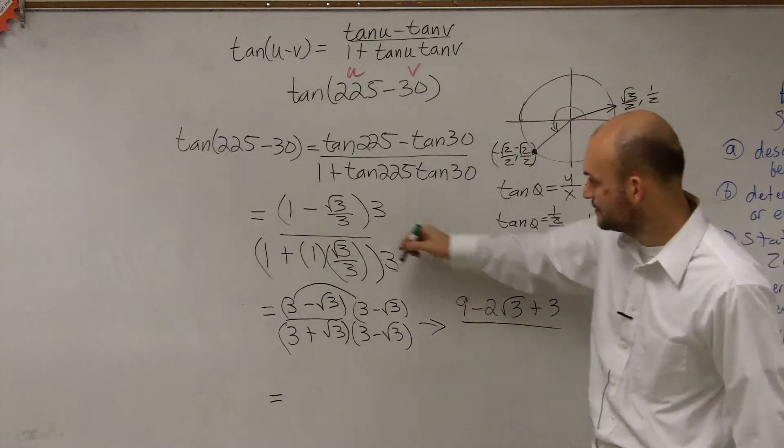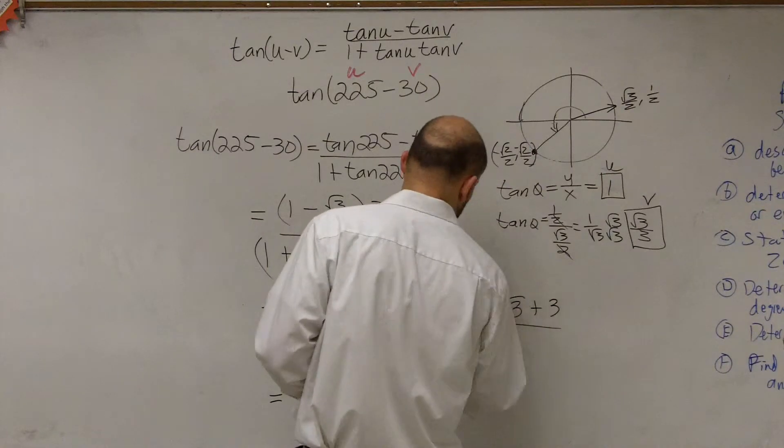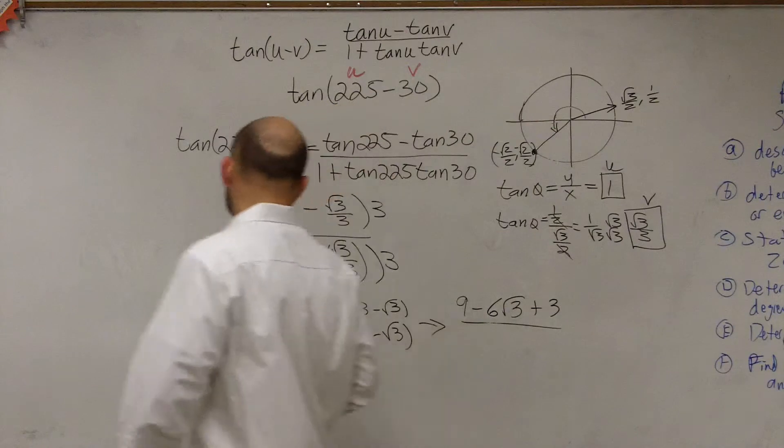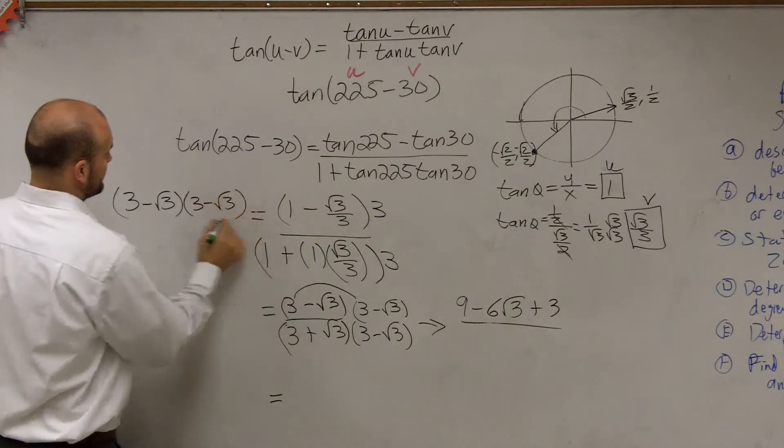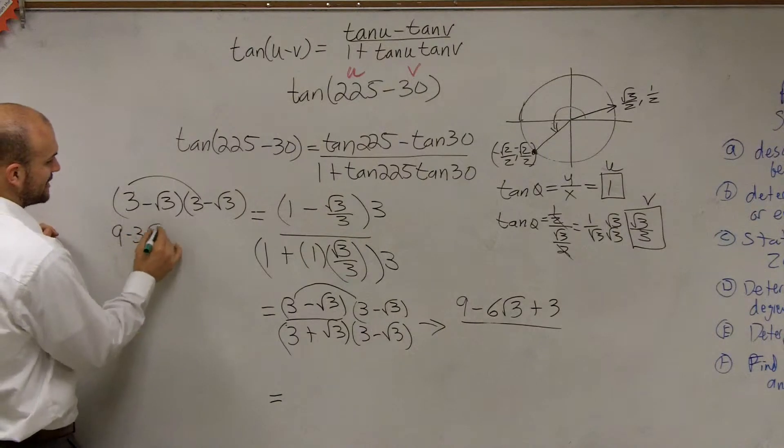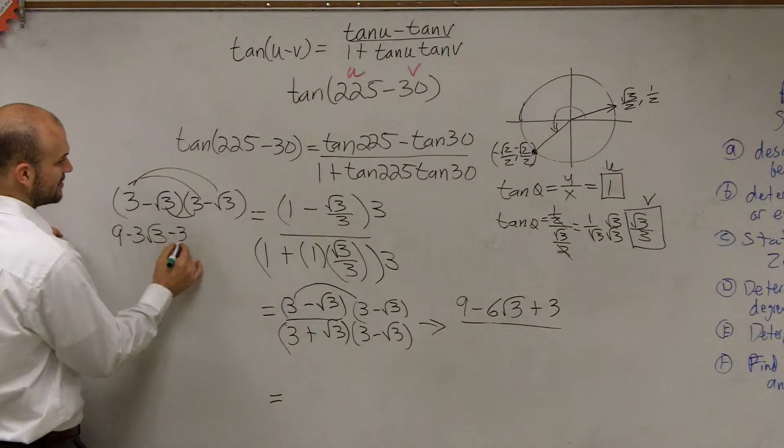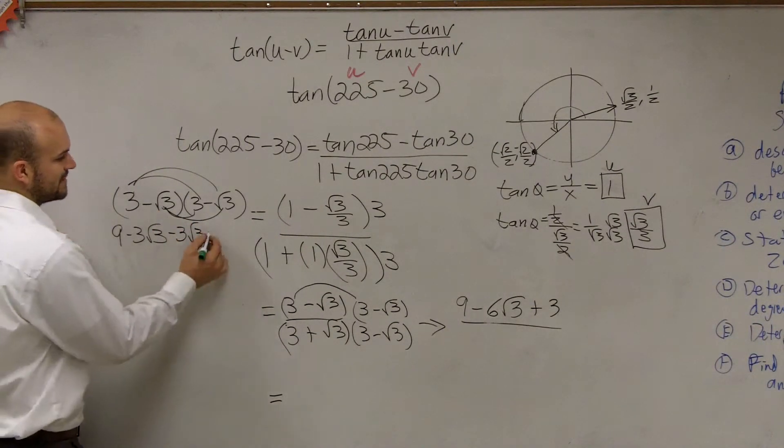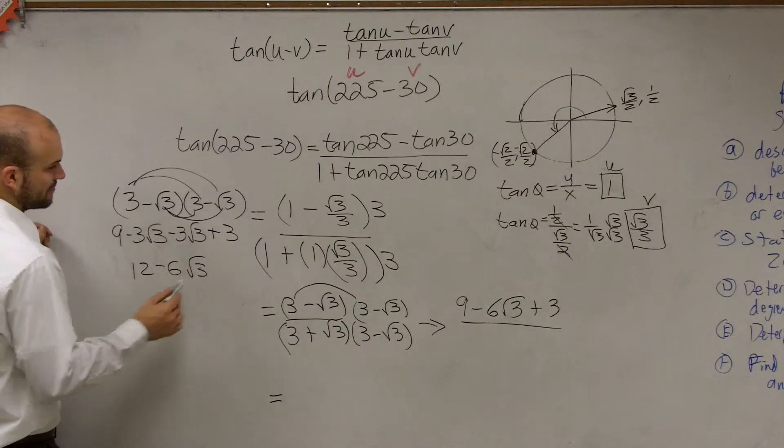3 times 3 is 9. Let me just show my work so you guys can see exactly what I'm doing. 3 minus the square root of 3 times 3 minus the square root of 3. 3 times 3 is 9. 3 times negative square root of 3 is a negative 3 square root of 3. Negative square root of 3 times 3 is a negative 3 square root of 3. And negative square root of 3 times negative square root of 3 is going to be now a positive 3. So therefore, I end up getting 12 minus 6 square root of 3.